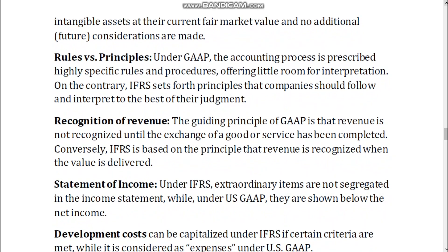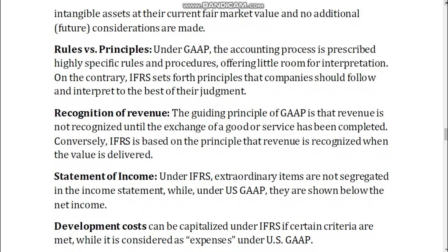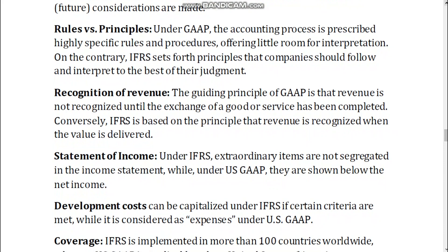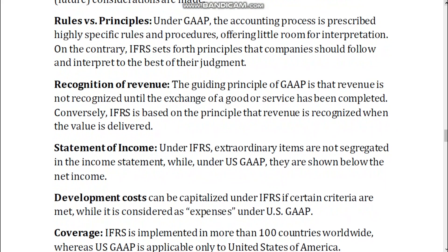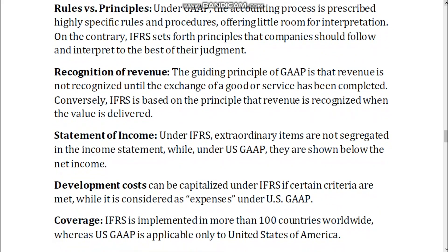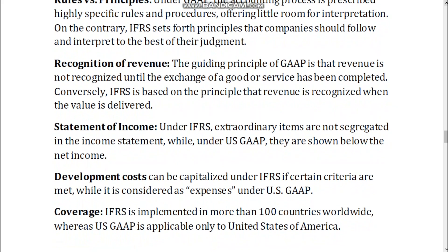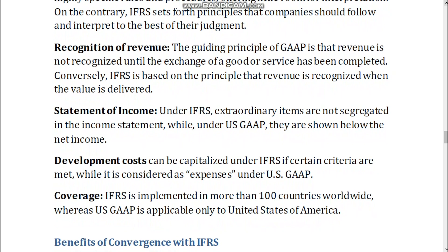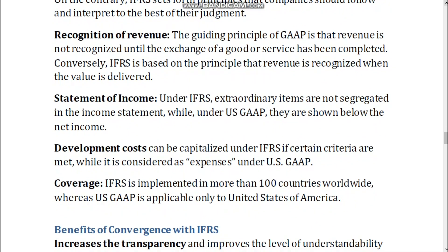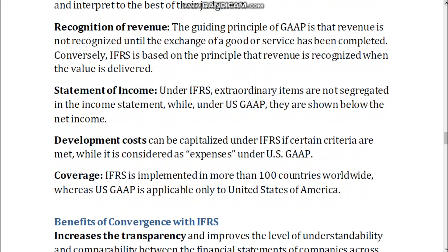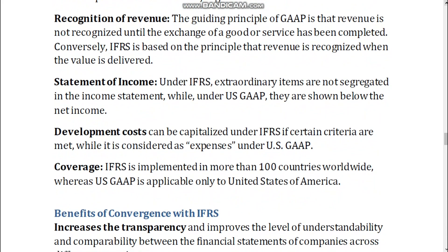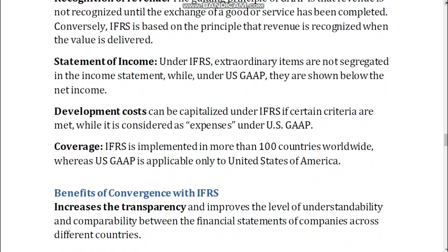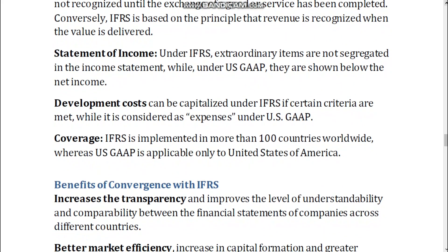Rules versus principles: under GAAP, the accounting process is prescribed highly specific rules and procedures, offering little room for interpretation. On the contrary, IFRS sets forth principles that companies should follow and interpret to the best of their judgment. Recognition of Revenue: the guiding principle of GAAP is that revenue is not recognized until the exchange of a good or service has been completed. Conversely, IFRS is based on the principle that revenue is recognized when the value is delivered.